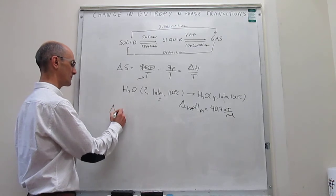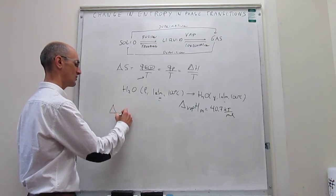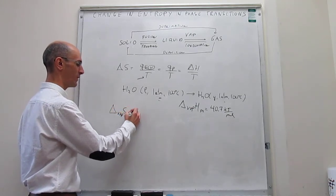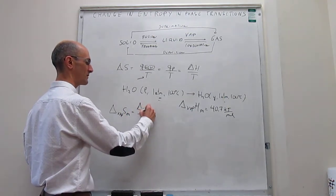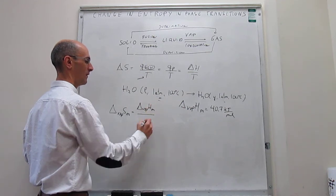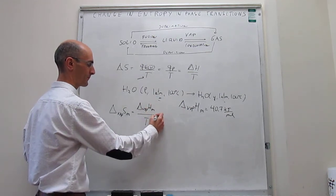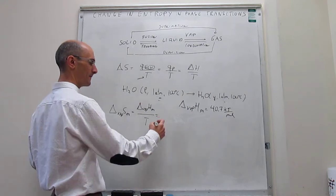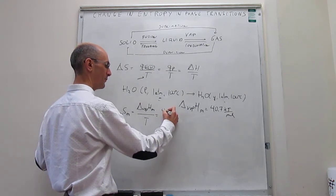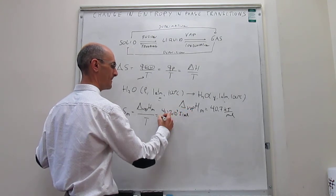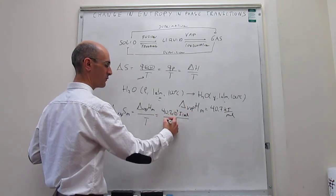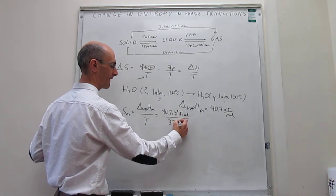So then what we have to do is the change in entropy in the vaporization of water on a per mole basis is simply going to be equal to the enthalpy of vaporization of water per mole over the temperature. The data here are 40.7 times 10 to the 3 joules per mole, and then the temperature at which this takes place will be 373 kelvin.